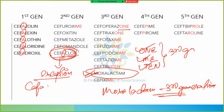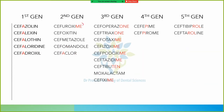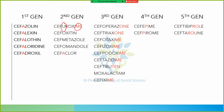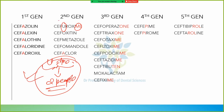Cefaclor, although it has 'a' in it, is second generation. Cefuroxime, although it has 'me' in it — which should make it third generation — is actually second generation. To remember cefuroxime: 'cefuroxime has you and me' — two people — so it is second generation.